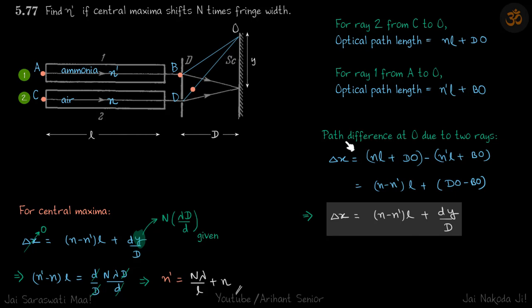So now the difference of that. Path difference at O due to the two rays, delta X is this distance CDO minus ABO. So that is this minus this. That is nL plus DO minus n' L plus BO. So we rearrange, this becomes (n - n') into L plus DO minus BO.